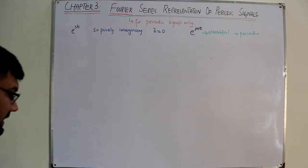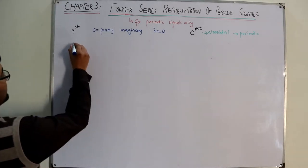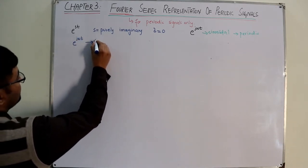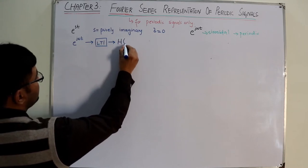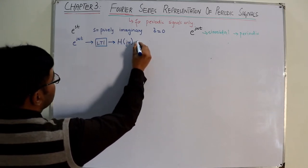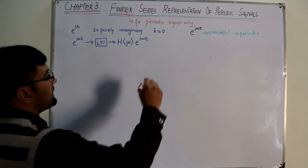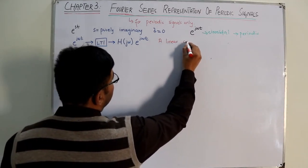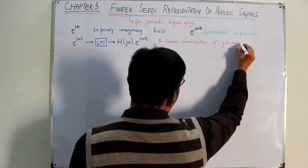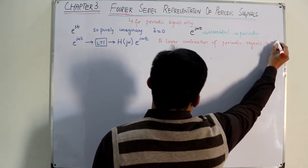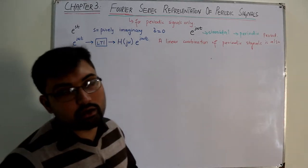If this is our input e^(jωt) and we give it to an LTI system, we know it is the eigenfunction of the system. So we get the eigenvalue H(jω) multiplied by the same eigenfunction e^(jωt). Also note that a linear combination of periodic signals is also periodic — this is a simple but very important point.